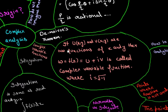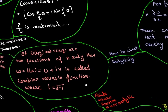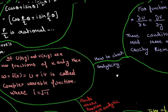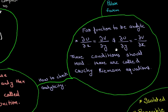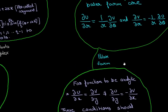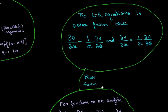It says that if u of x, y and v of x, y are two functions of x and y, then w is equal to u plus iv is called a complex variable function where i is root of minus one. There is a check for analyticity which are the Cauchy-Riemann equations, and also there is a polar form of Cauchy-Riemann equation in here.